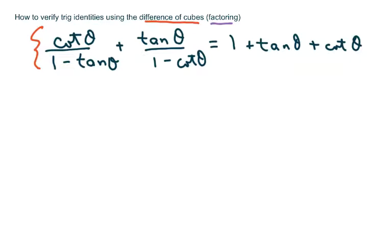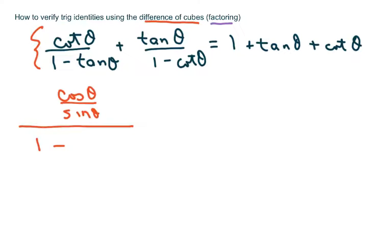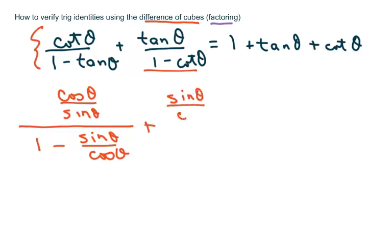So we're going to have cosine of theta over sine of theta, divided by 1 minus sine of theta over cosine of theta. And this one here would be sine of theta over cosine of theta, divided by 1 minus cosine of theta over sine of theta.